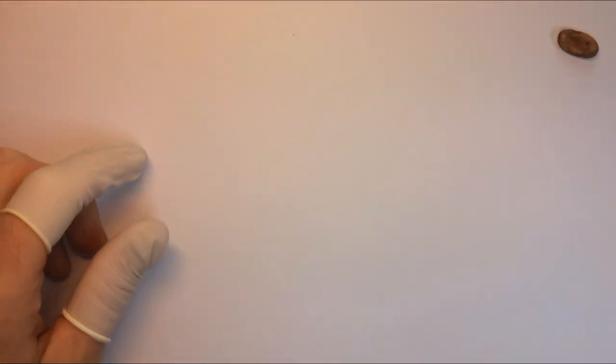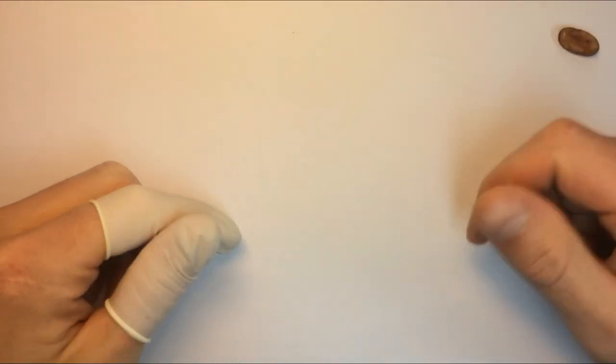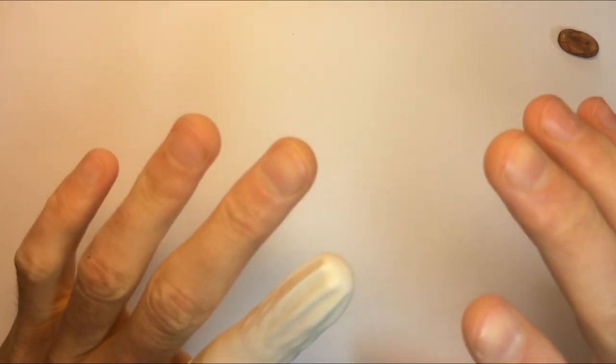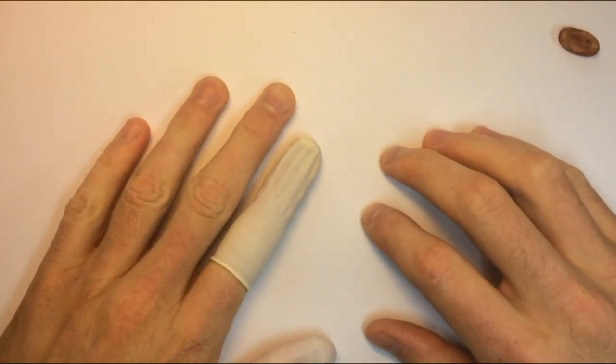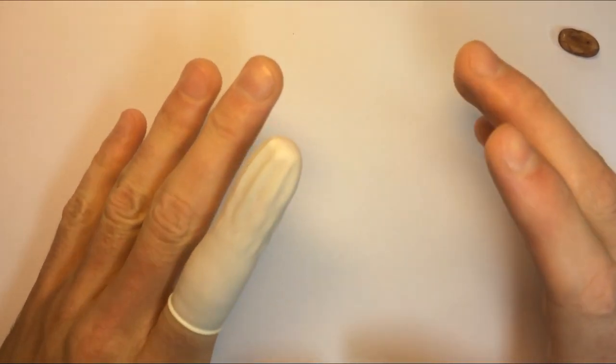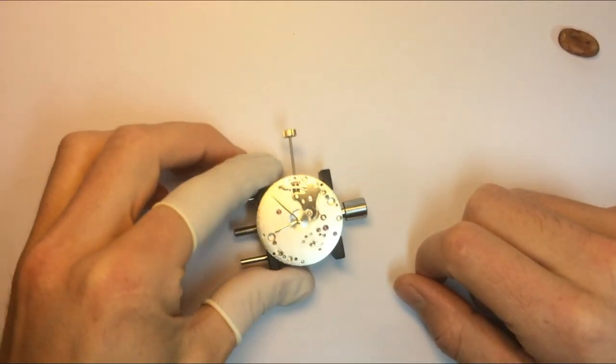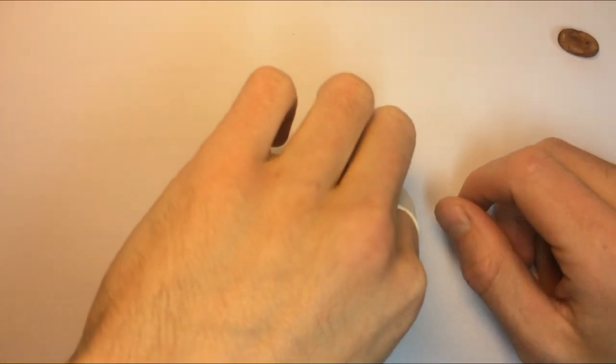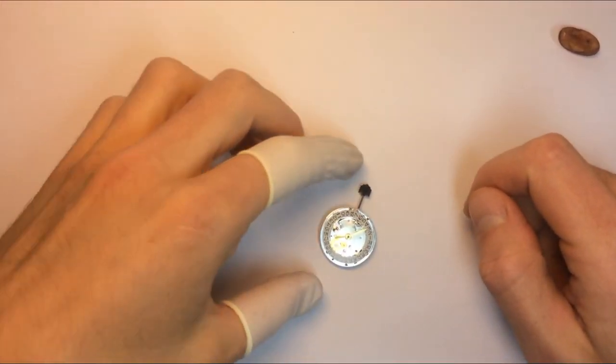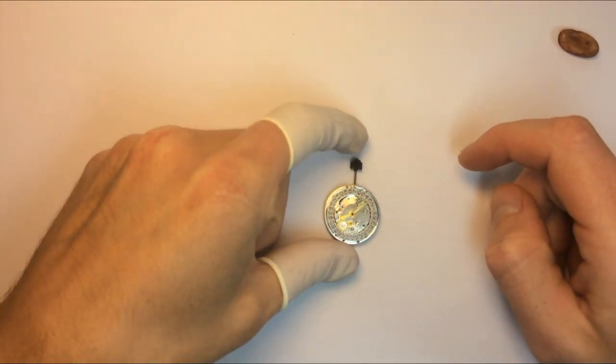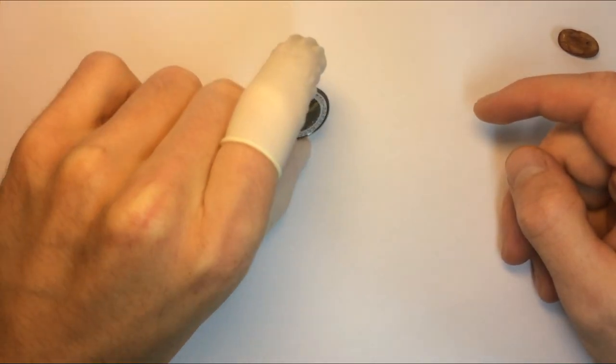That's pretty much it. These are the five tools you need to get started with watchmaking and realize if it's good for you or not. Basically I did the calculations. If you're going for the decent package, decent quality for everything along with the movement, you're going to spend $200 or less. If you're going for the budget option, basically the cheapest of everything and also the cheap movement, you're going to spend $60 or less.